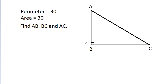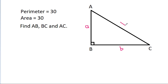In this video, we have given a right-angled triangle whose perimeter is 30 and area is 30. We have to find AB, BC, and AC. Suppose AB is A, BC is B, and AC is X.